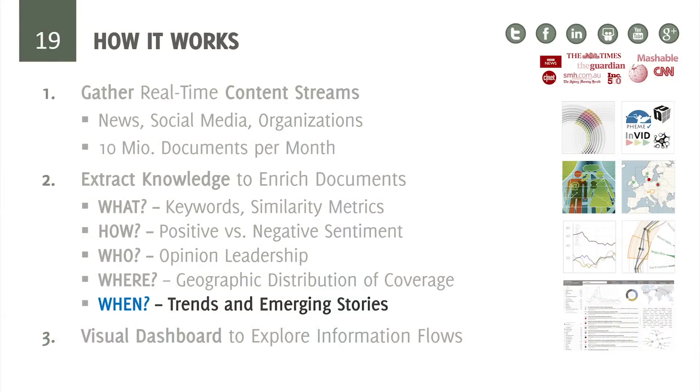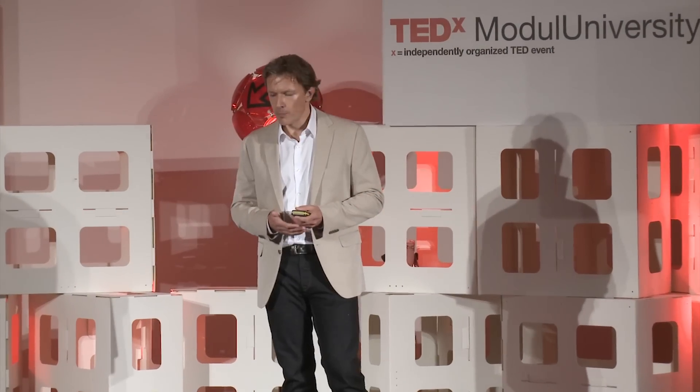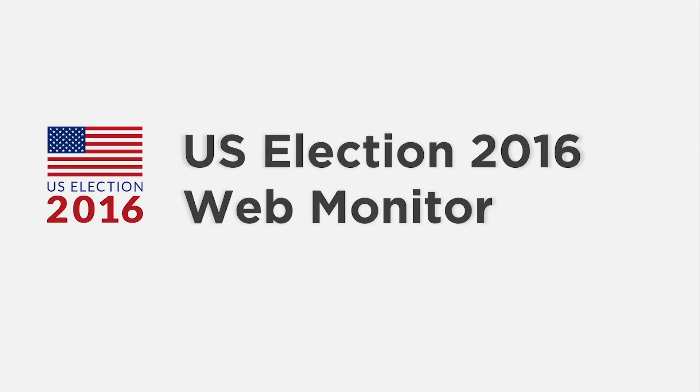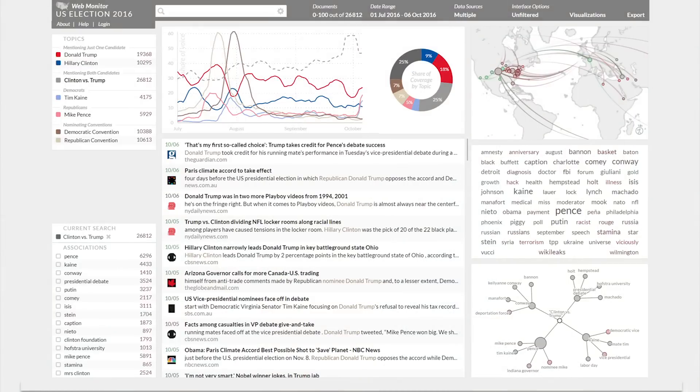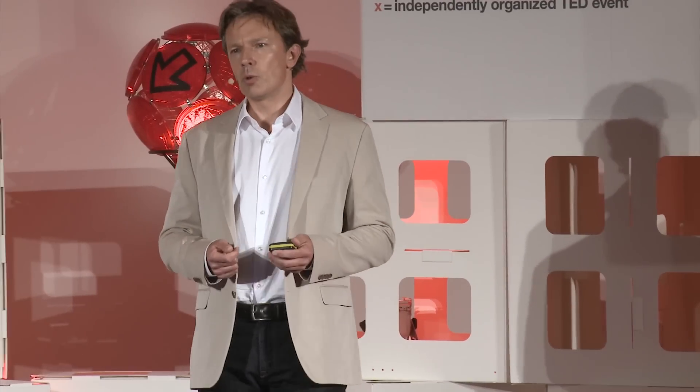For the last dimension — time — so when are things happening, what are trends, what are emerging stories, I would like to use a different system to show that the underlying technology is generic and cannot only be used for environmental issues. There's another system we have recently launched: the US Election 2016 Web Monitor. As the name suggests, we are tracking the coverage around the presidential race and the candidates. The dashboard looks very similar to the one built for the United Nations, but of course the topics being configured and the content fed to the portal is quite different.